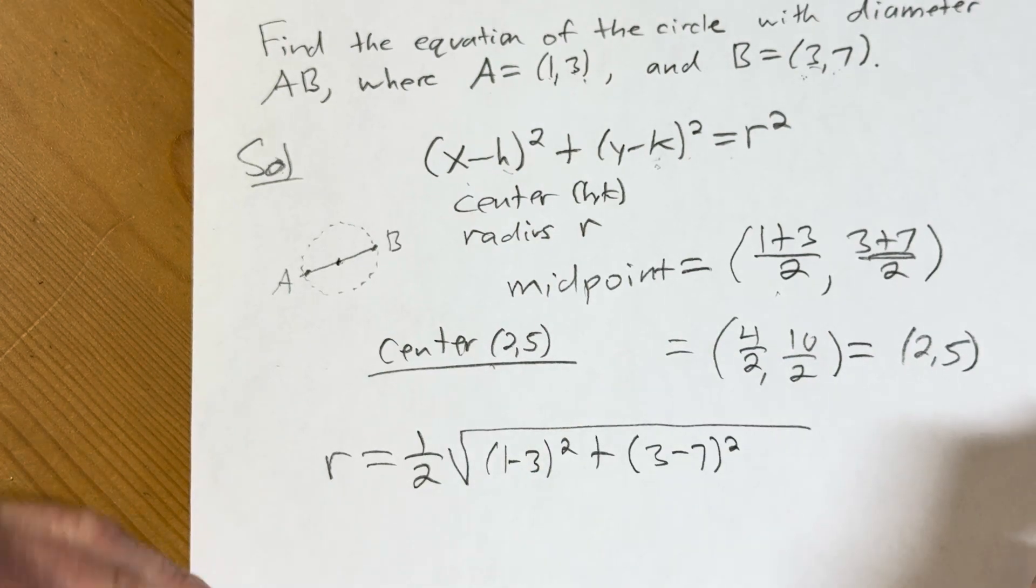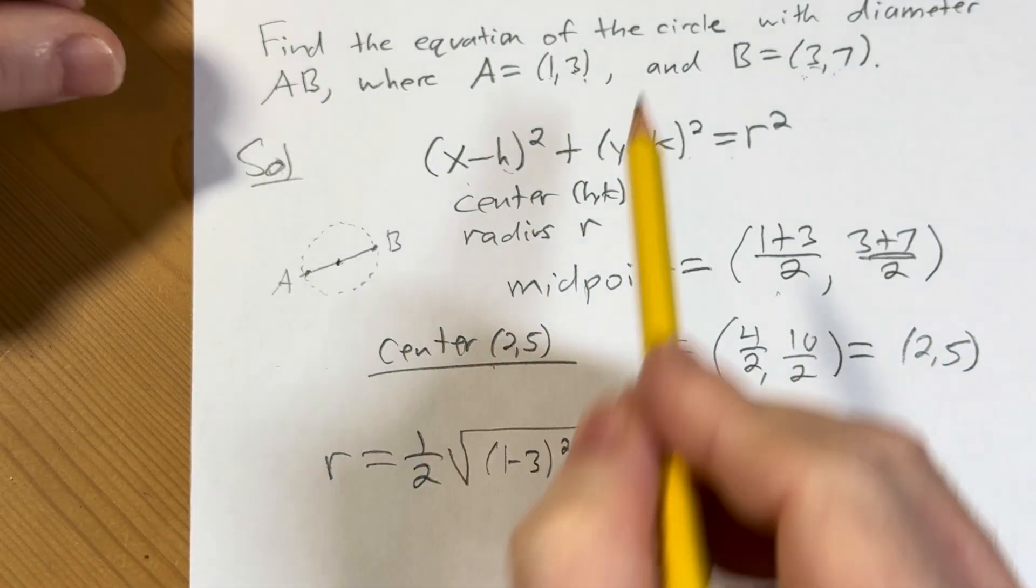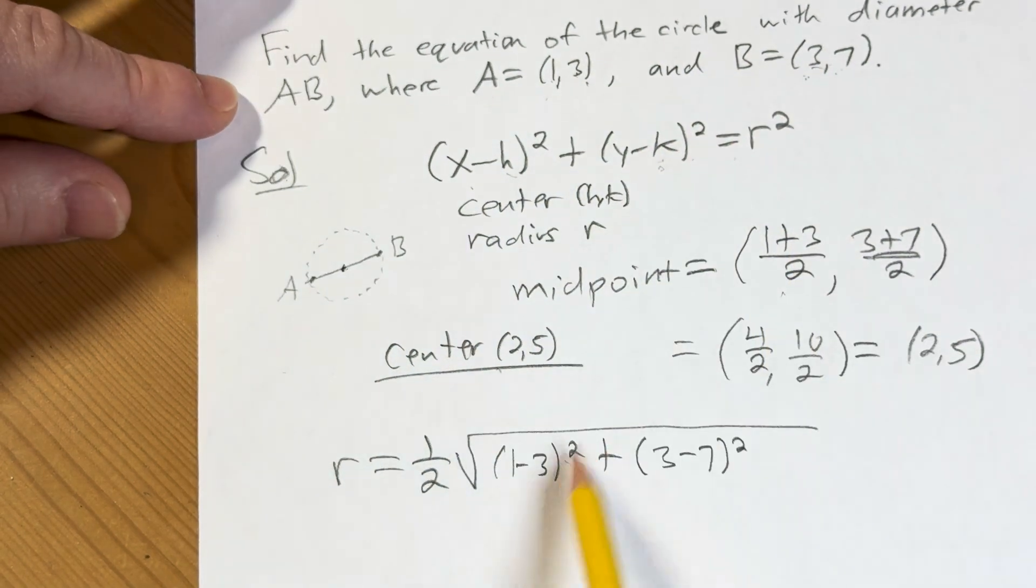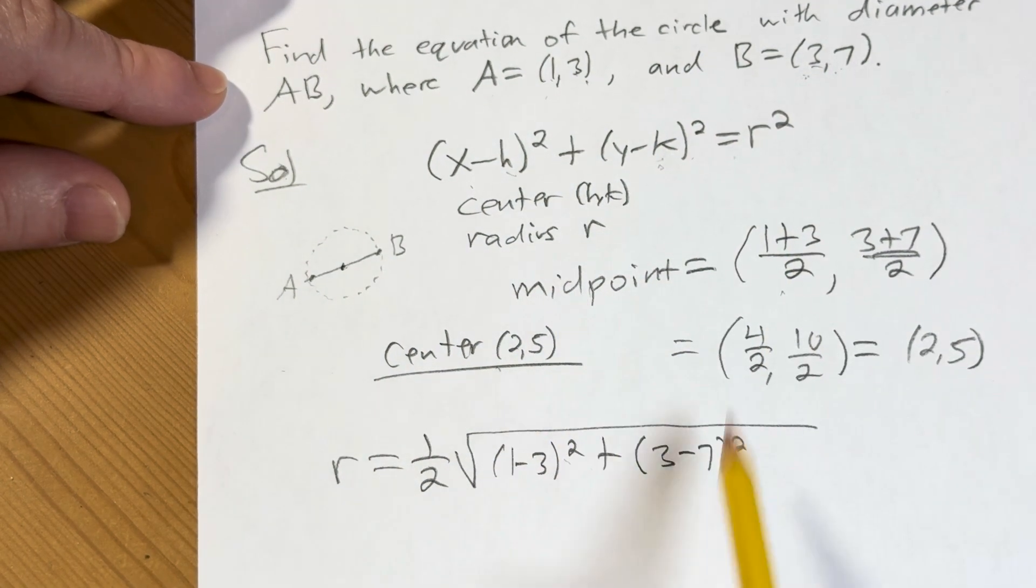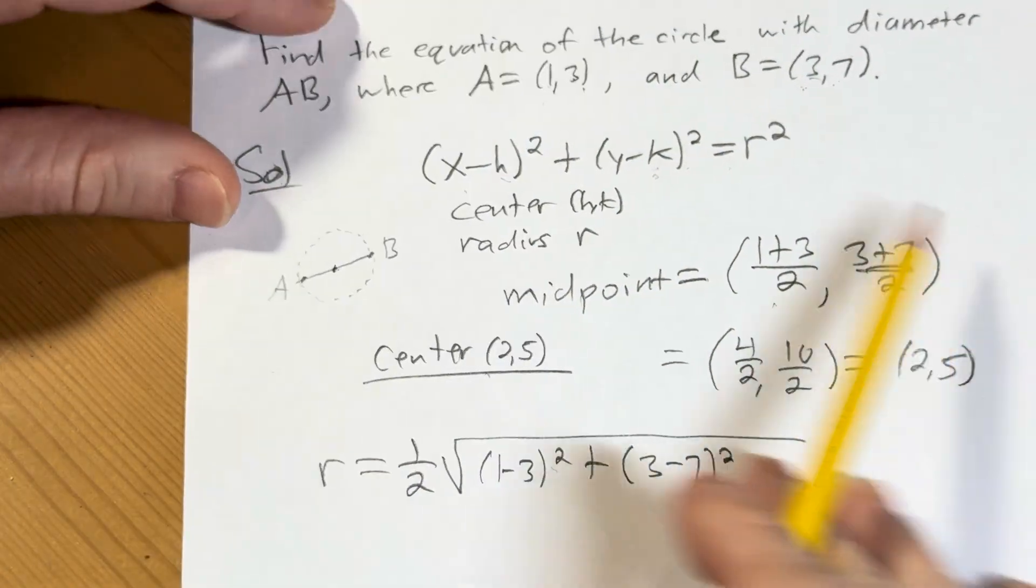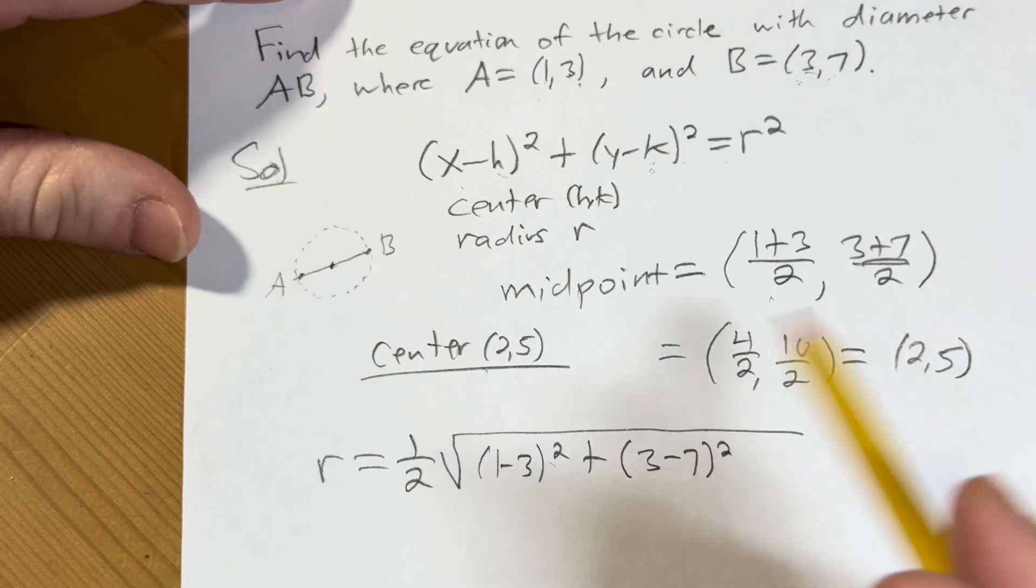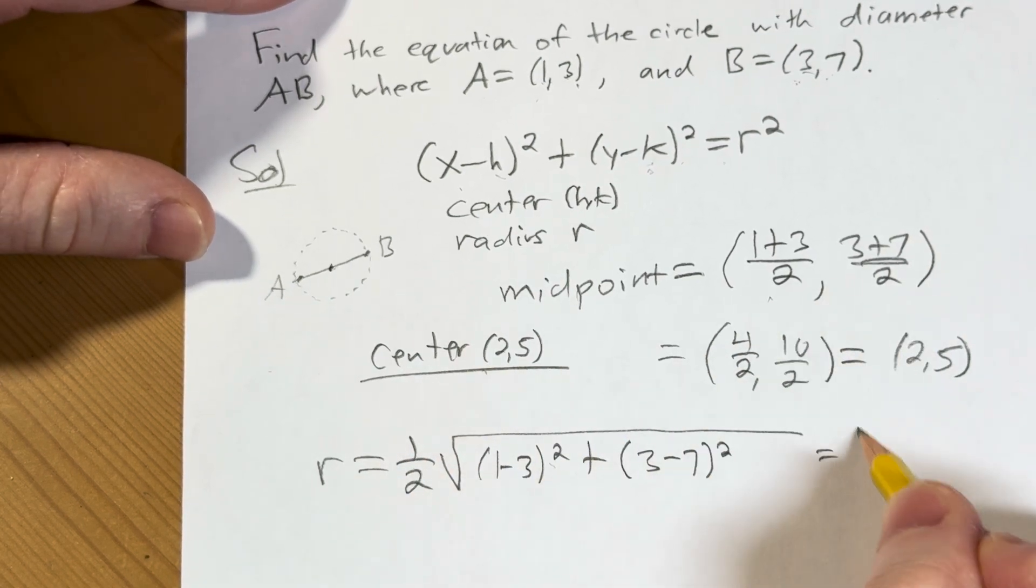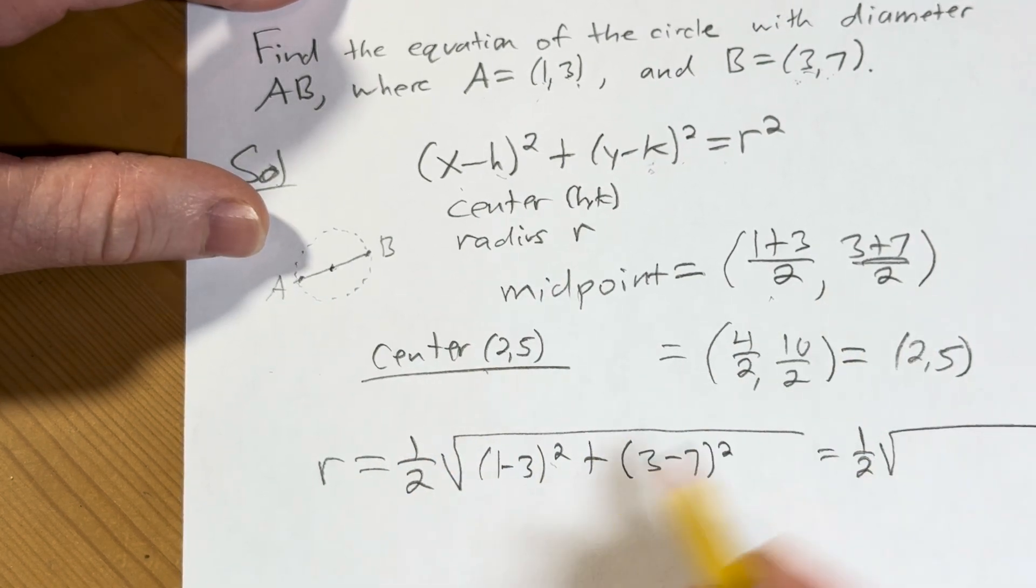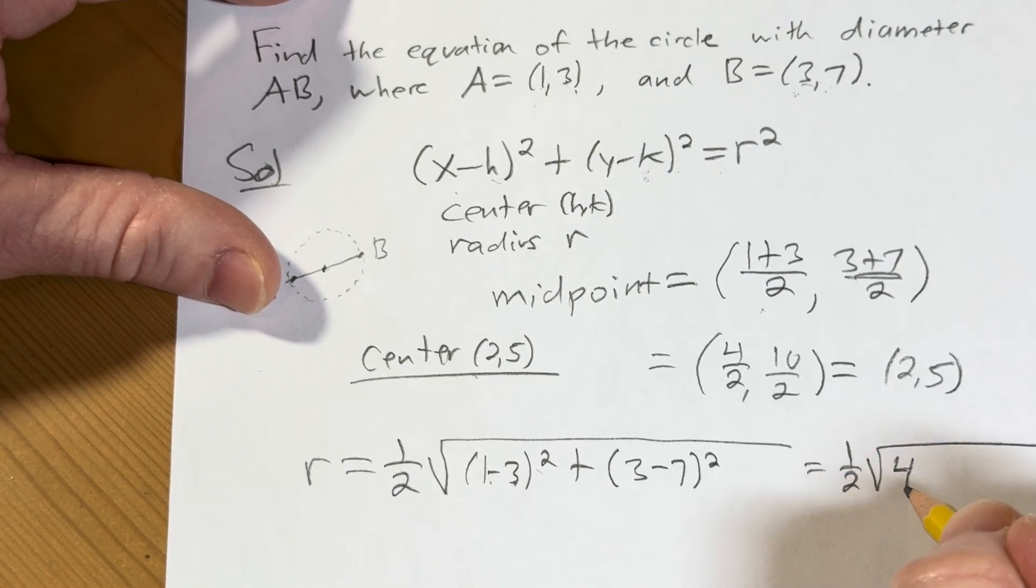So the distance formula says to find the distance between two points, you subtract the x's, you square the result, you add, subtract the y's, square the result, and take the square root of that. And that gives you the distance between any two points in the plane. This generalizes to higher dimensions as well. So continuing, we have 1/2 times the square root of, 1 minus 3 is negative 2, you square negative 2, you get 4.